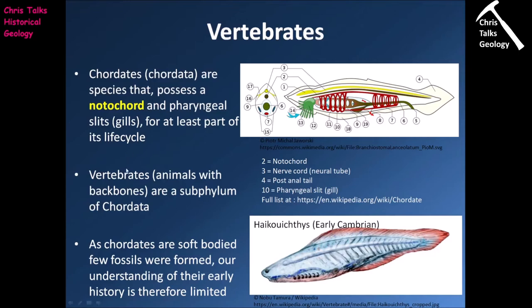Vertebrates are actually a subphylum of Chordata. A vertebrate has a segmented backbone — in our case a spinal column made of vertebrae. In terms of the early evolutionary history of the chordates and vertebrates, we have a bit of a problem: fossils are relatively few and far between. The main reason is that notochords and early vertebrates used materials like cartilage to make their skeletons, and cartilage as an organic material will decompose, unlike calcium phosphate in bones or calcium carbonate in sea shells, which are far more robust minerals that will successfully fossilize.